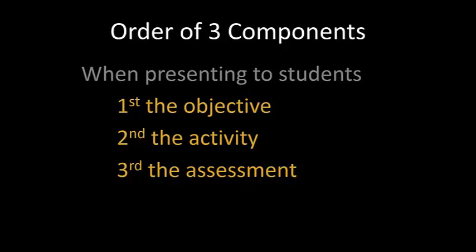So when you're presenting this information to students, it's very important that you very clearly give it to them in this order. Explain to them the objective — what they will be able to do after they have completed this level of learning. Then explain to them the activity that they'll practice, perform, or produce in the process of learning this information or skill.